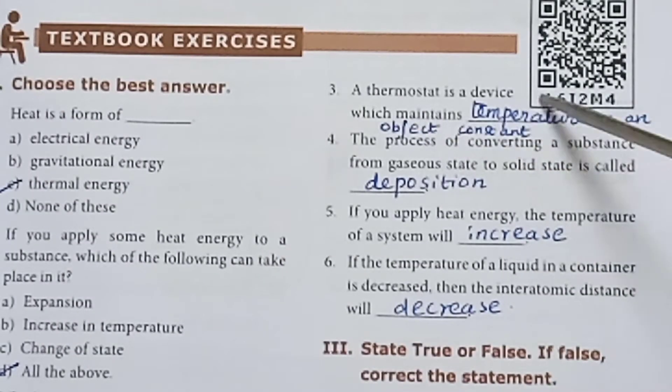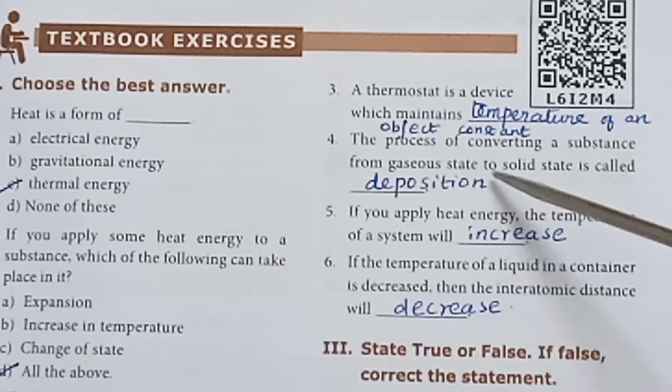A thermostat is a device which maintains temperature of an object constant. Fourth one: The process of converting a substance from gaseous state to solid state is called deposition.